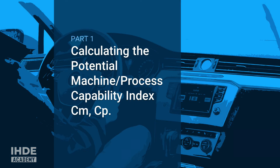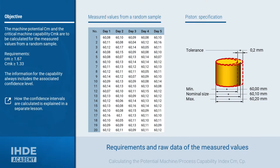Let's start with the calculation of the potential machine and process capability and discuss how this can be improved. Basic knowledge of the capability indexes is required for this — if these are not yet available, you are welcome to look at the previous lessons. In this case study, it is to be examined whether the machine or the process is able to meet the demands in terms of capabilities.